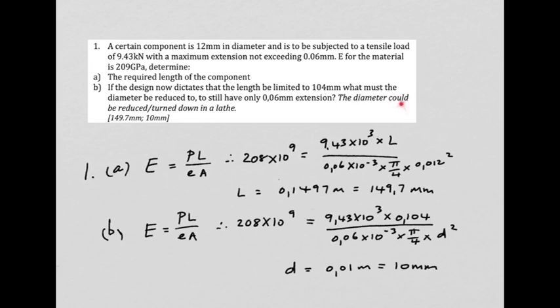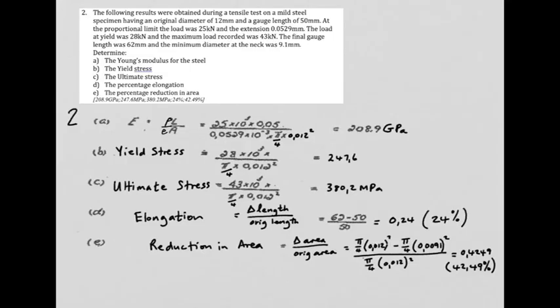We could turn it down in a lathe. If we now make the diameter the unknown in that same formula and keep everything else the same, the length is now set at 104. We find that a 10 millimeter diameter would now yield the same extension. So let's compare: the diameter is now 10 and in the beginning it was 12, so we have to take off 2 millimeter diameter in the lathe.